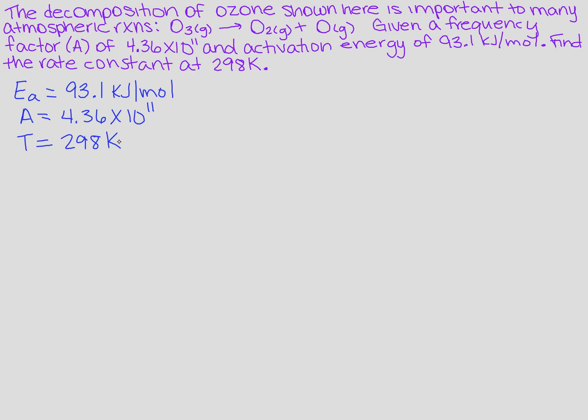Now we want to find K, right? That's your rate constant. And we have a formula for that. We have that K equals big A times e to the negative Ea over RT.